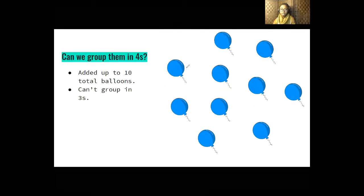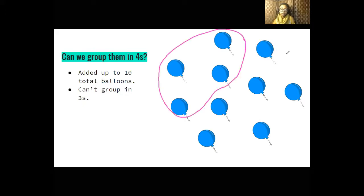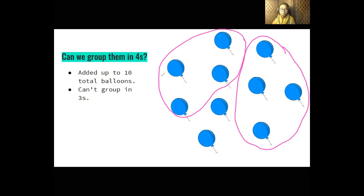Let's try to group our balloons in groups of four, to see if we can get equal groups with none left over. Here's one group of four, and here's another group of four. But we have two left over — two groups of four and another group that is not equal to the others. So four is not the number we can use to find equal groups among our ten balloons.